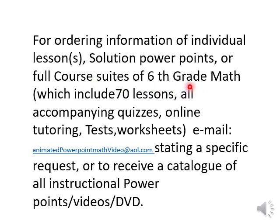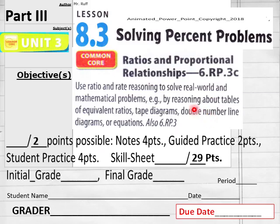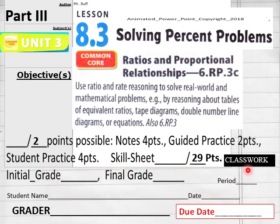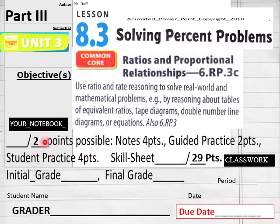Hello everybody, we're getting ready to do lesson 8.3 part 3 of 6th grade math today. We have 29 points on your class worksheet — have those out in front of you now, students, and put your name, date, and period on your class worksheet. You also have two points on your notebook guide — have that ready to go.